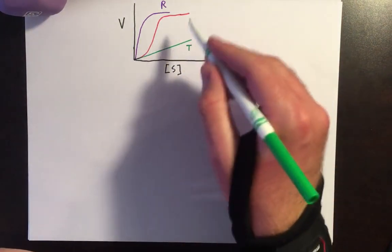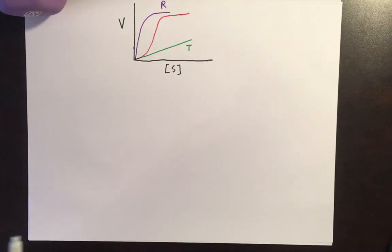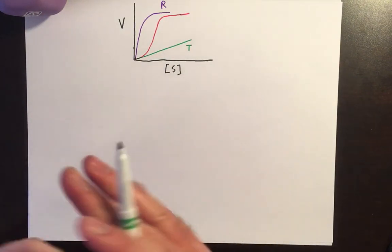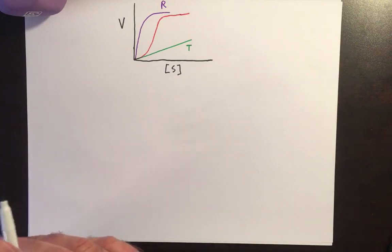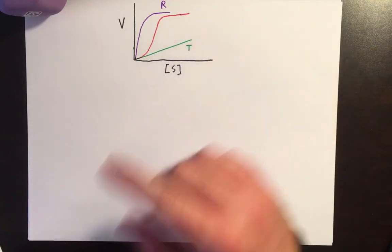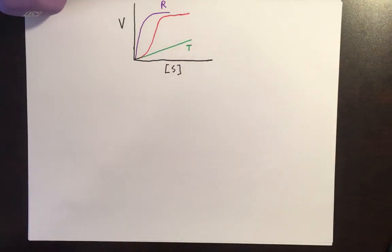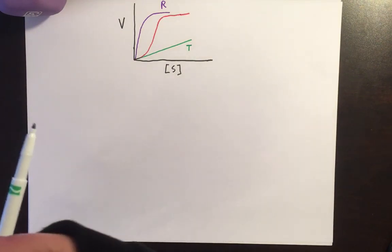And so what we get here in this center, I'm going to say this red, is a combination of those two things. And there's two models that we have that adequately explain the sigmoidal nature of enzyme kinetics. There's the concerted model and then the sequential model.